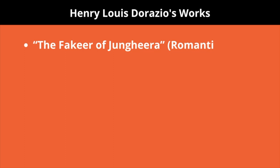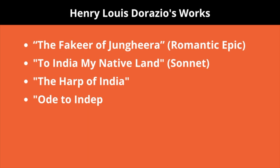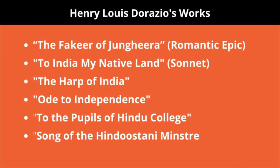Derozio has written many works. For instance: 'The Fakir of Jangira,' a romantic epic; 'Sonnet to India — My Native Land'; 'The Harp of India'; 'Ode to Independence'; 'To the Pupils of Hindu College'; and 'Song of the Hindustani Minstrel.' Remember these titles from a UGC NET perspective. You can make notes from this video or highlight from the study material booklets provided.